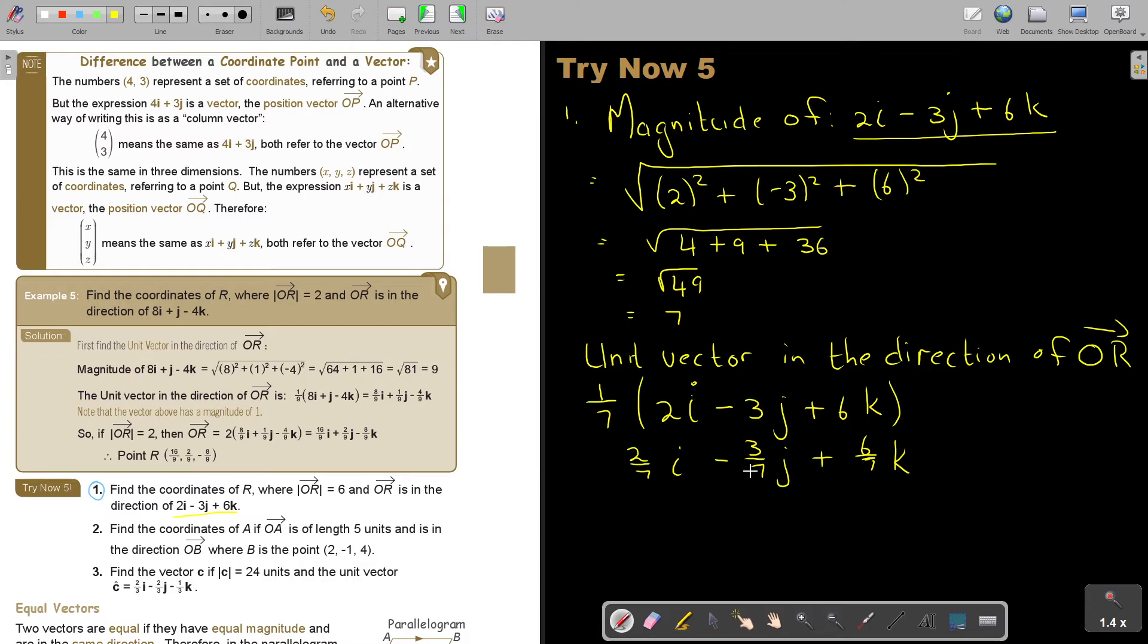So if OR equals 6, then the vector OR is going to be 6 times this unit vector which I created.